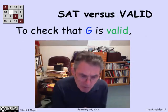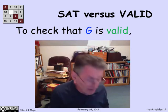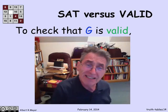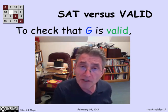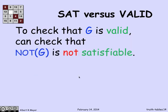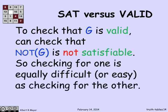Closely related to SAT is validity: if I want to know whether a formula G is valid, valid means it's always true, which means its complement not G is always false — that is, not G is not satisfiable. So checking that G is valid is equivalent to checking that not G is not satisfiable, and vice versa. SAT and validity stand and fall together: if you had a fast way to do one, you'd quickly get a fast way to do the other. We'll examine in subsequent lectures why this problem is so important.